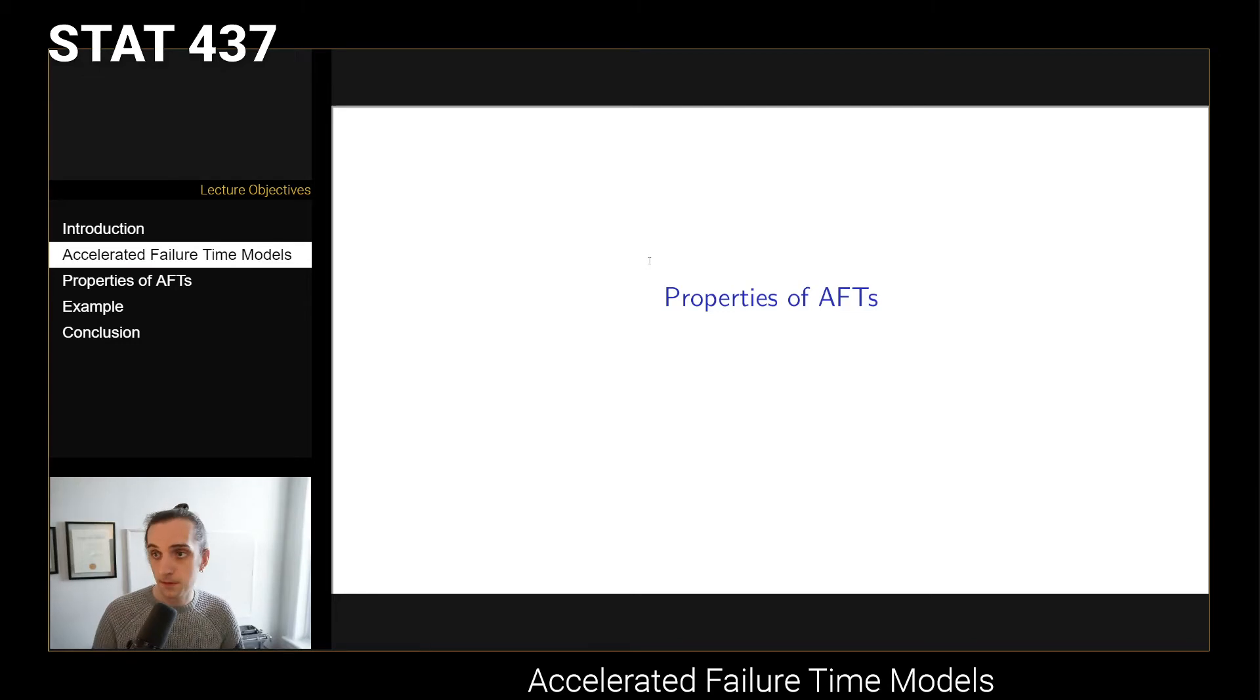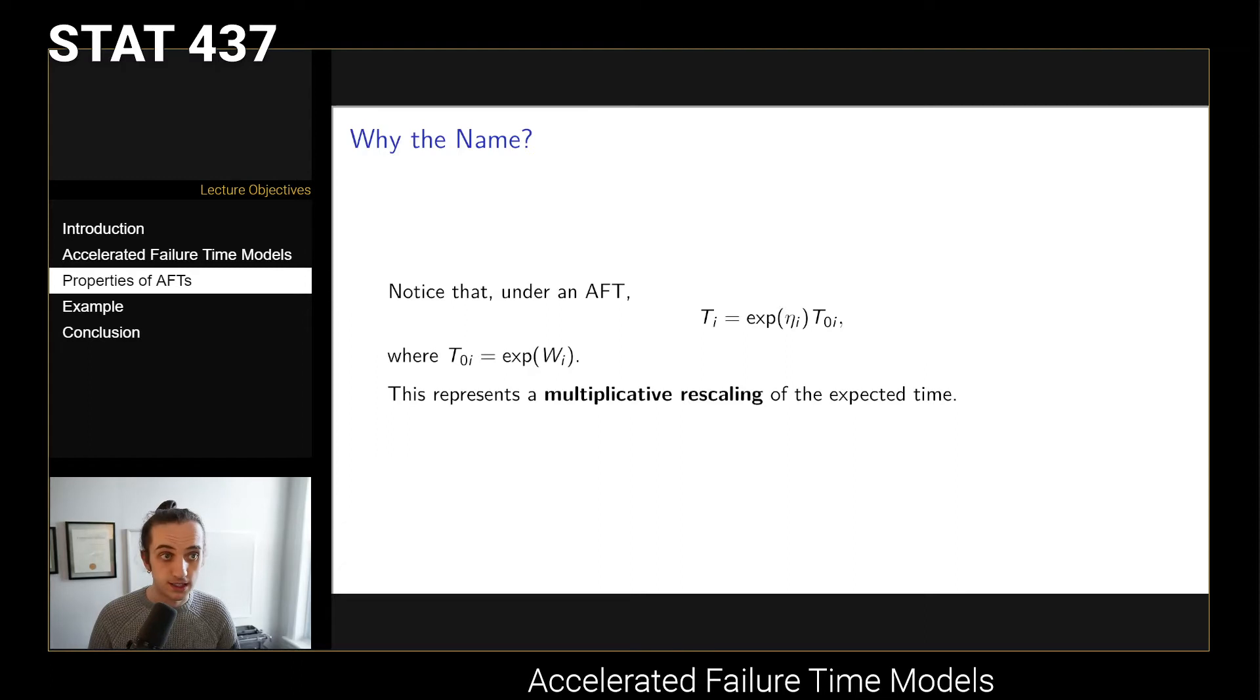What are some of the properties of AFTs? If you have your AFT, you can rearrange the model to find that time Ti is given by the exponential of that linear predictor times by T0i. T0i represents the baseline time. If someone is such that the exponential of eta i is equal to 2, the survival time is going to be twice the normal time if they didn't have those covariates.